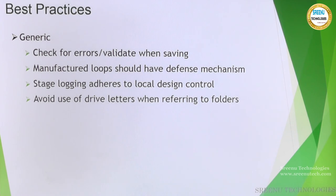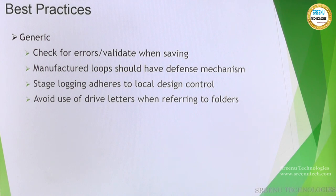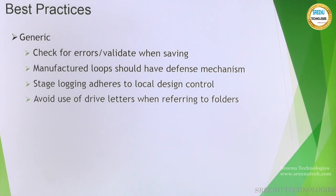These generic best practices apply to both Process Studio and Object Studio. Always validate when saving — before saving any flow, run a validation check to identify hidden errors and fix them beforehand. If you save without validating and then close the object, you may lose the unsaved fixes. Make it a best practice to validate first so that what you save is clean and error-free.